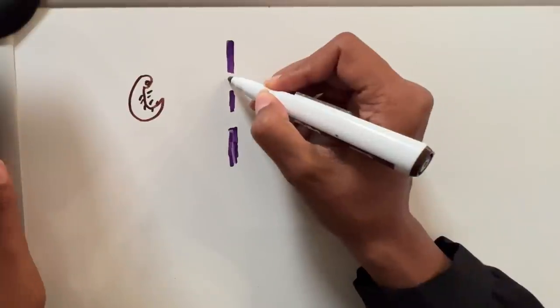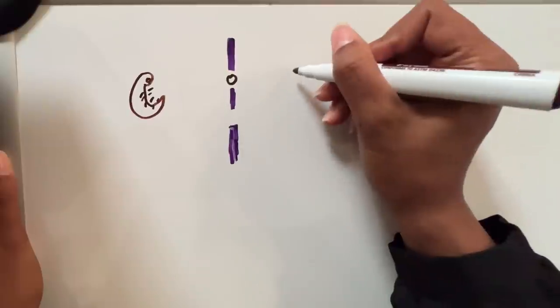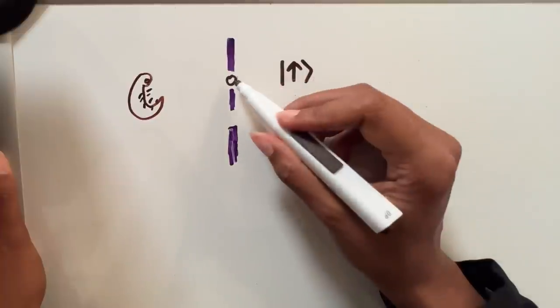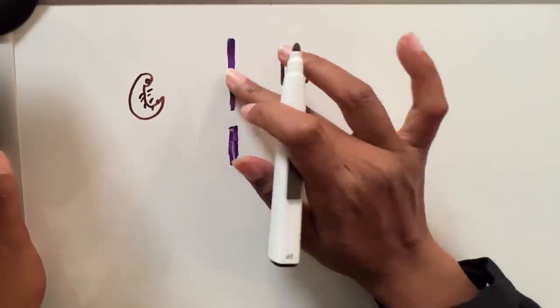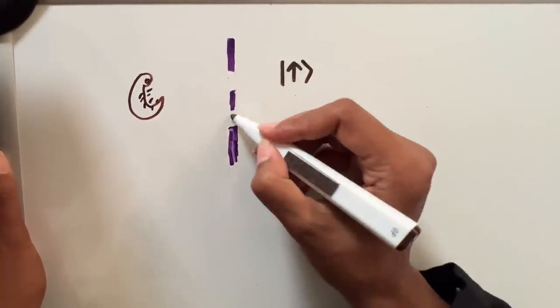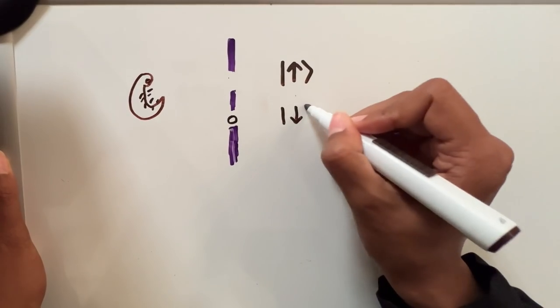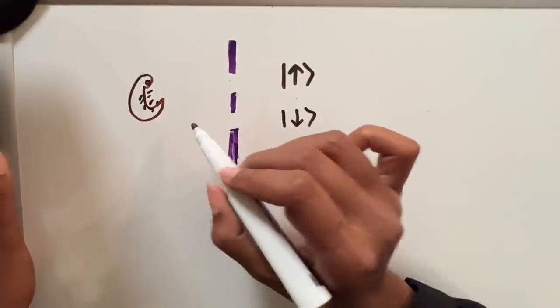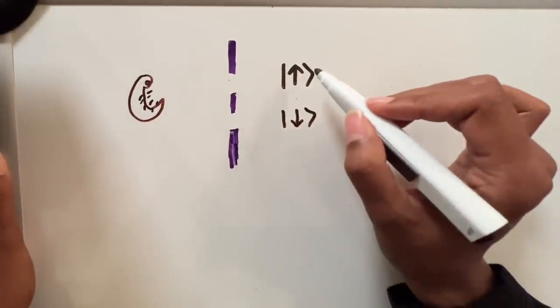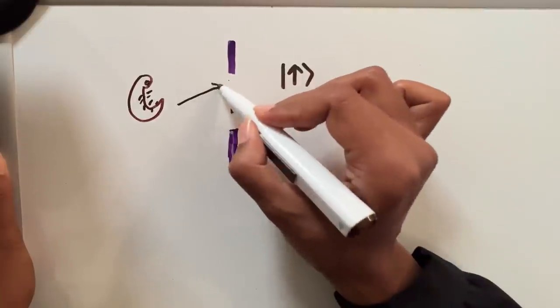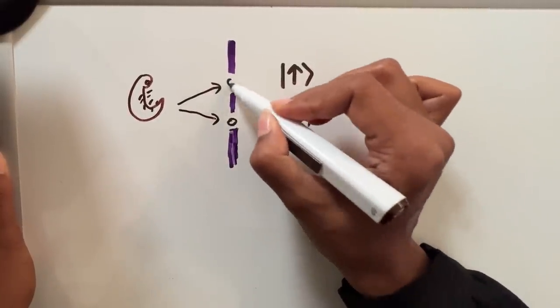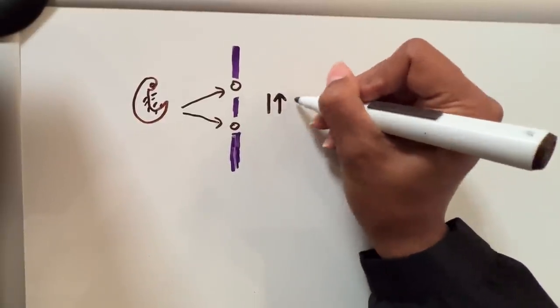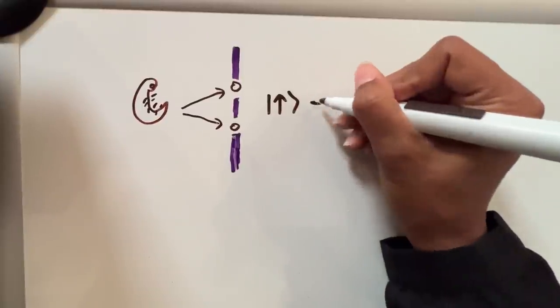If the creature was to go through this slit here, then we will say that it is in the state up because it went through the up slit, whereas if it were to have instead gone through this one, then we'll say that it was in the down slit. The thing with quantum mechanics is that if you do it right, you should be able to get a superposition of the object going through both of these at the same time. In that case we could say that the object was in a superposition of having gone through both.